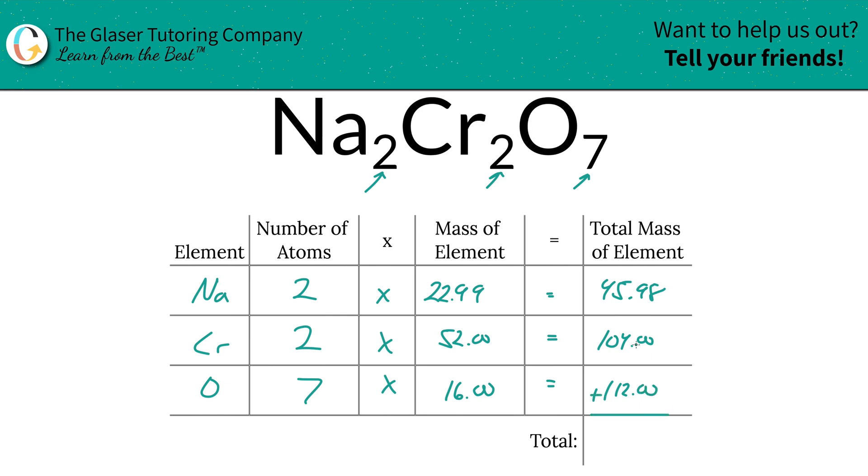And then oxygen is going to be 112. To find the total mass of the compound then, all you simply got to do is literally add up that column now. So the total mass here is going to be 261.98.